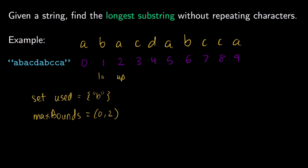The character at index up — up is still at 2 — so we see that character A is not currently in our used set. So we add A to used and adjust our upper bound, increasing it to 3. Now we check if our new bounds is greater than our max_bounds. The difference from 1 to 3 is 2, and the difference of our max_bounds is also 2 — so there's no difference and we don't have to update max_bounds.